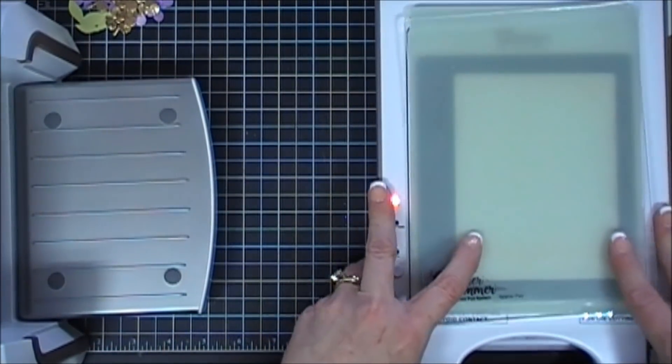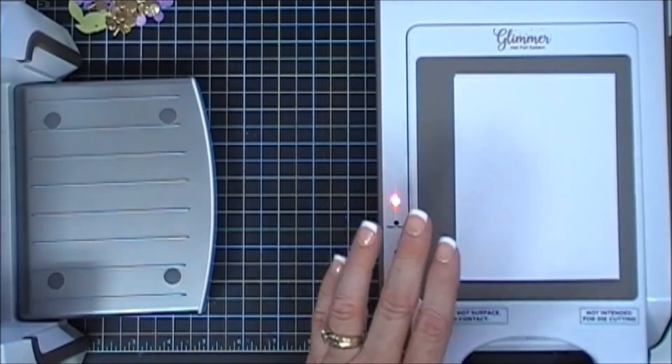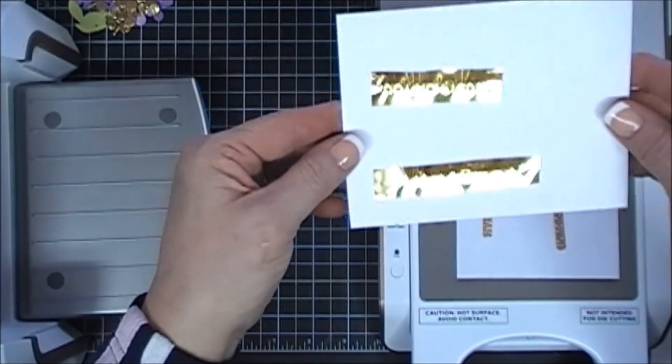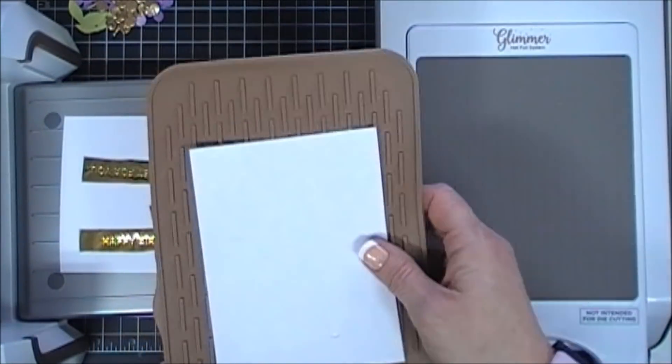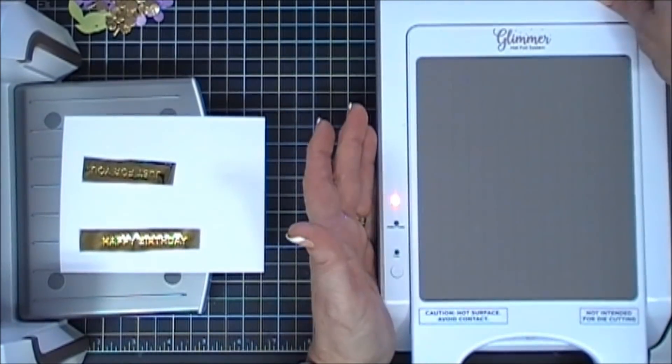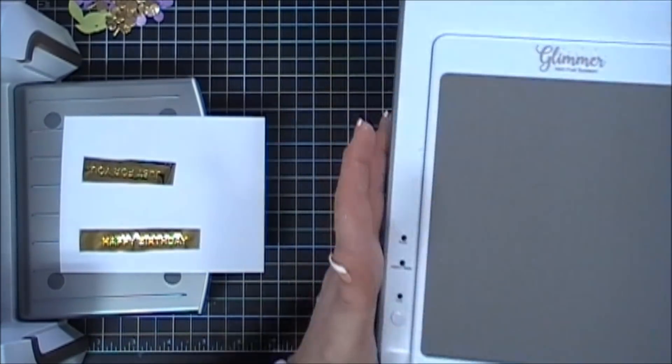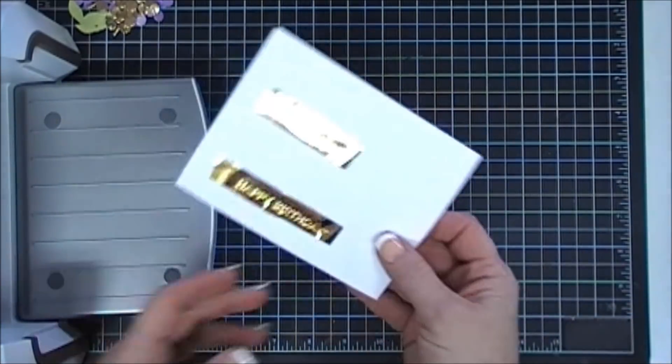You want to make sure that that stays positioned, but I like running it through my die cut machine forward and back kind of on the slower side. And then we just remove our plates. I'm going to take my cooling mat and add my sentiment plates here.